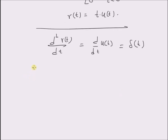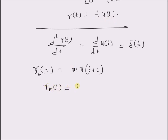Now, a general ramp signal can be defined as R_m of t is equal to m times R of t plus c, where c is the offset and m is the slope of the ramp. And when c is equal to 0 and m equal to 1, we come back to the basic ramp signal, which is given by t times u of t. In this case, R_m of t is equal to m times t plus c for t greater than or equal to minus c, and 0 elsewhere.